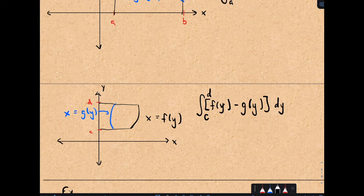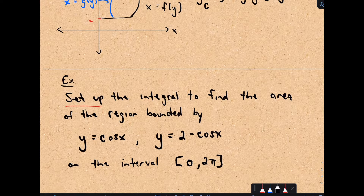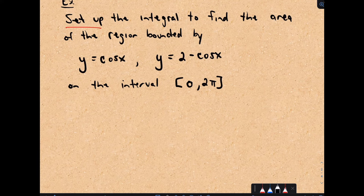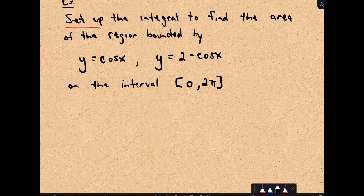If you have a nice graph, it's usually pretty straightforward to set up — but that's not always the case. Let's set up the integral to find the area of the region bounded by y equals cos x and y equals 2 minus cos x. I know I'm integrating from 0 to 2 pi somewhere, but maybe I have to split this up. One thing I try to do is find points of intersection — maybe I don't know what these graphs look like.